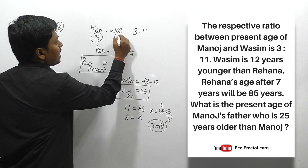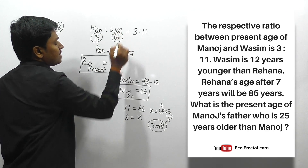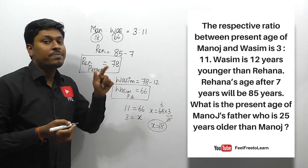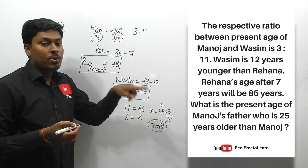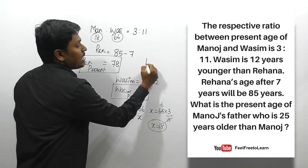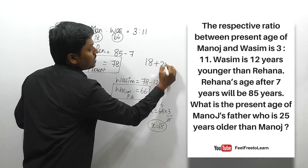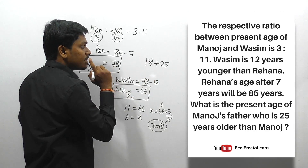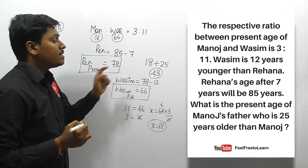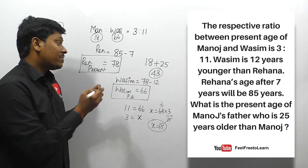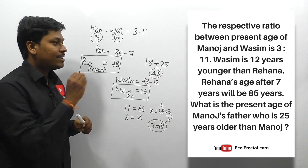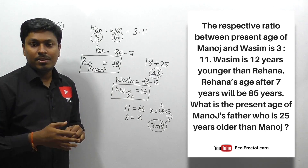Manoj's present age is 18 and Vasem's present age is 66. Manoj's father is 25 years older than Manoj, so 18 + 25 = 43. The present age of Manoj's father is 43. Understanding the concept allows you to solve all related questions on exams.